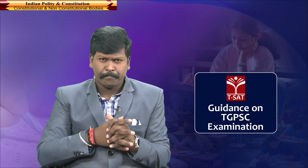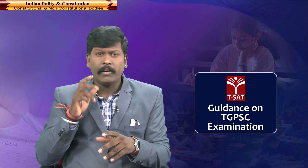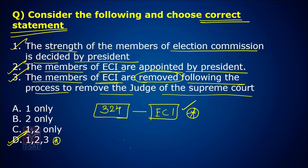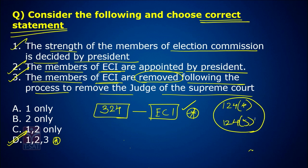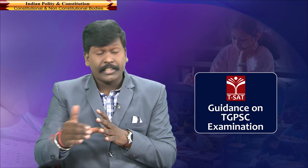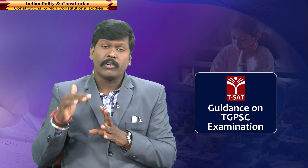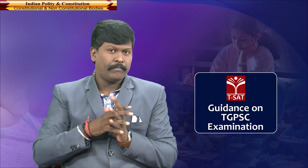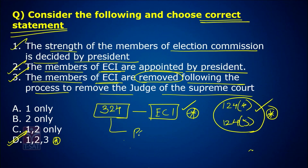Now the third point — very important. According to Article 324, an Election Commissioner can be removed only following the process to remove a judge of the Supreme Court. That procedure is mentioned in Article 124(4) and 124(5). The same procedure applies for removal of election commissioners. Additionally, an election commissioner receives a salary equivalent to that of a Supreme Court judge.